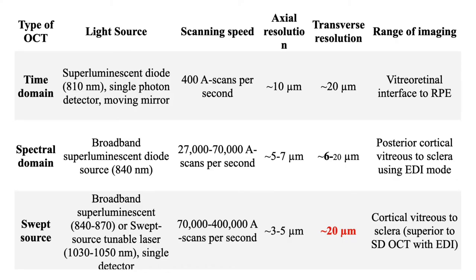Time domain was able to do 400 scans per second. Compare that to spectral domain, which is 27,000 to 70,000 scans per second, and swept-source, which goes all the way up to 400,000 scans per second. This allows much faster acquisition time, and the ability to scan people with poor attention span or difficulty with fixation, and to acquire better images through averaging.